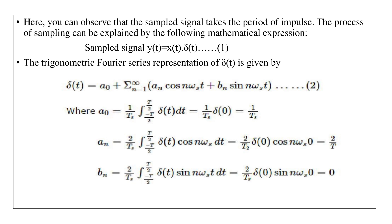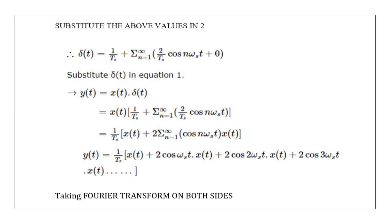The trigonometric Fourier series representation of δ(t) is given by equation (2). Find the a₀, aₙ, and bₙ coefficients, and finally substitute the above values. Substitute delta T value in equation (1), taking Fourier transform on both sides.